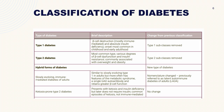Moving to the classification of diabetes, which is a recent update. Type 1 and type 2 diabetes remain the same. Type 1 has beta cell destruction, mostly immune-mediated, with absolute absence of insulin, with onset commonly in childhood or early adulthood. Type 2 diabetes mellitus, or insulin-resistant diabetes, is the most common type, with varying degrees of beta cell dysfunction causing insulin resistance, commonly associated with overweight and obesity.